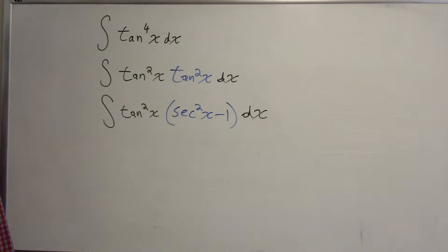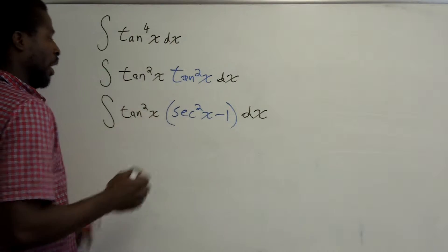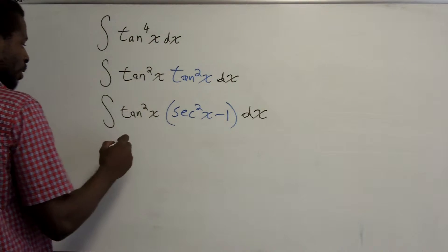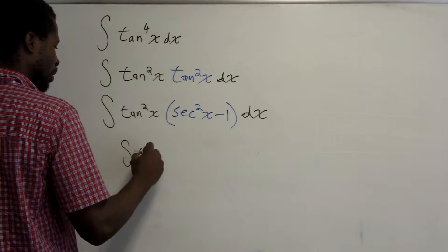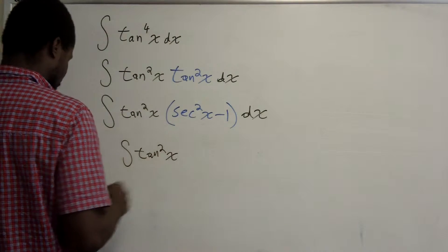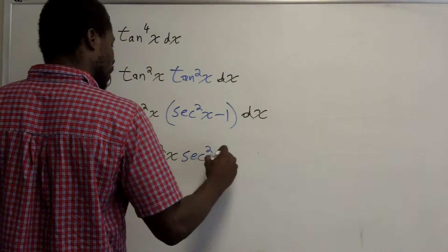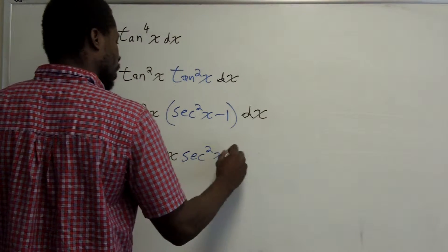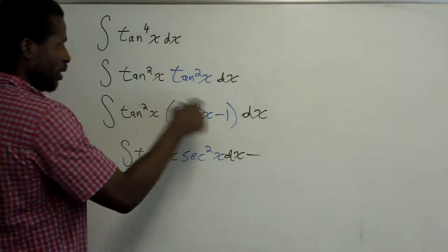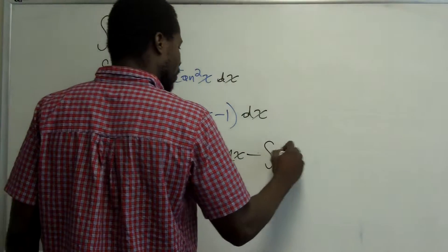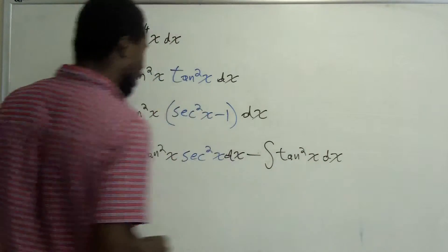Now we're going to distribute, just like we've done before, and we're going to get two separate integrals. The first integral is the integral of tangent squared of x times secant squared of x dx. The second integral is minus the integral of tangent squared of x dx.